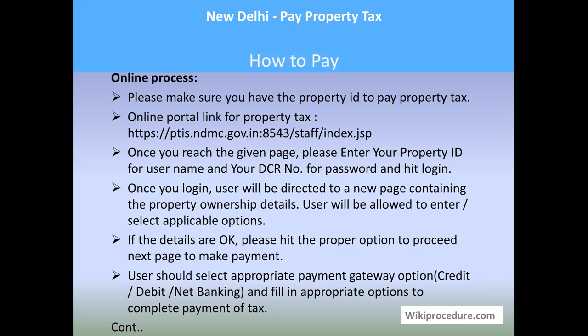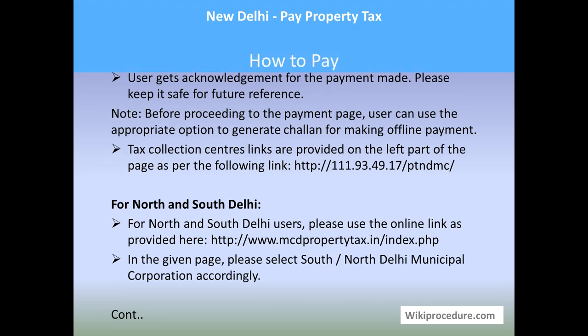After entering the details, the system will display the amount you need to pay. At this stage, there are two buttons available: one to get a challan printed for offline/direct payment, and one to pay online. Use the online payment tab to go to the payment gateway page, select the appropriate option for your payment type, complete the online payment, and get the transaction receipt. Keep this receipt safely as proof that you have made the property tax payment online.